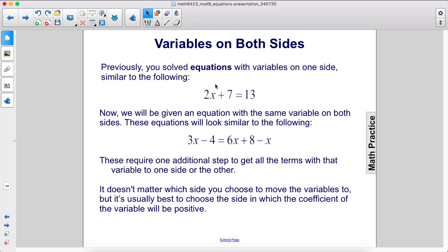Now, we will be given an equation with the same variable on both sides. These equations will look similar to the following: 3x minus 4 equals 6x plus 8 minus x. These require one additional step to get all the terms with that variable to one side or the other.